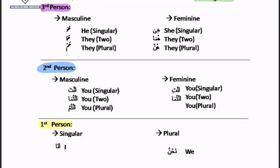For the first person, the singular is 'ana,' meaning 'I.' And when the first person is plural, we say 'nahnu,' meaning 'we.'